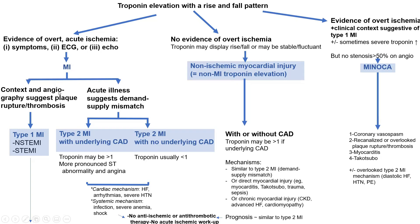There are four types of myocardial injuries. First, when you have troponin elevation with clinical features of ischemia, that's MI — divided into type 1 MI, the primary process of plaque rupture or acute coronary syndrome divided into non-STEMI and STEMI, and type 2 MI which happens in a demand-supply mismatch, subdivided into type 2 MI with underlying CAD and type 2 MI with no underlying CAD.